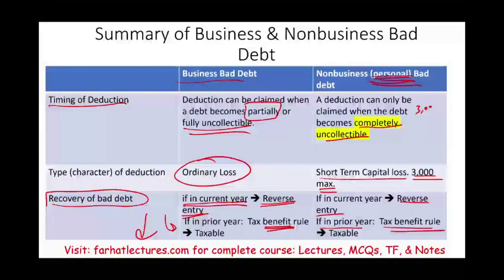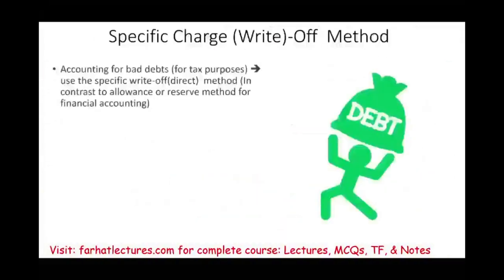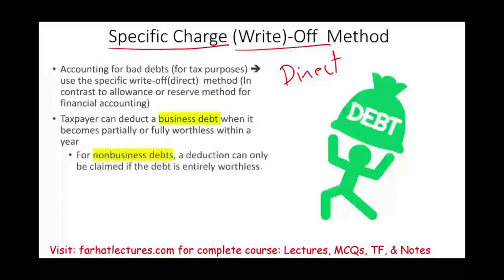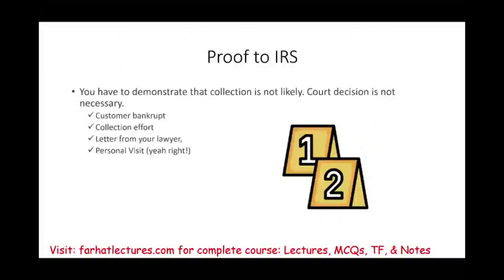Go to FarhatLectures for additional resources. To summarize: you learned about bad debt in financial accounting using the allowance method, but for tax purposes we cannot use the allowance method — we use the specific charge-off method, also called the specific write-off or direct write-off method. This means you cannot project uncollectible amounts; you must wait until the receivable is determined worthless after exhausting all collection efforts. Whether you're a CPA exam candidate, enrolled agent, or accounting student, check out additional MCQs and true/false questions on FarhatLectures. Good luck, study hard, and stay safe.